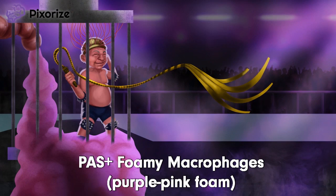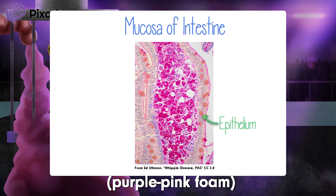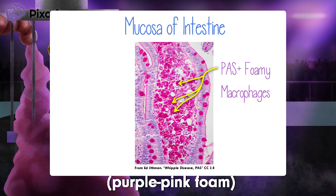This image is taken from the mucosa of the small intestine — that is, the outermost surface layer. The mucosa itself is made up of a few layers, the outermost of which is the epithelium. What we really want is what's underneath it. Underneath the epithelium lies the lamina propria, which is basically loose connective tissue. As you can see, we have a bunch of foamy macrophages that stain strongly PAS-positive.